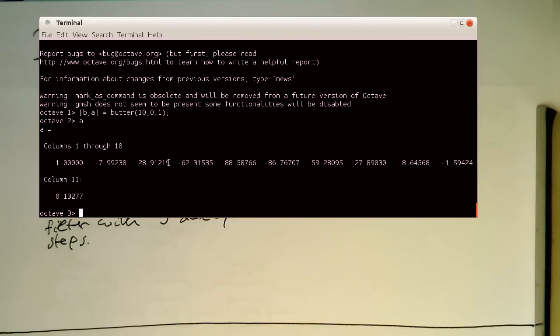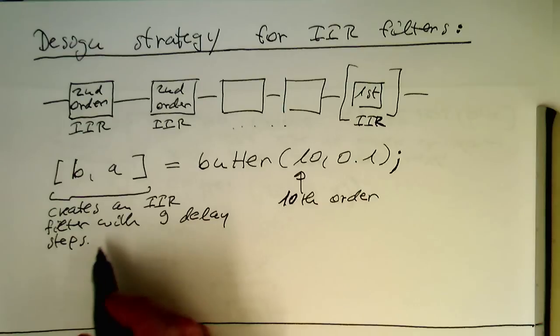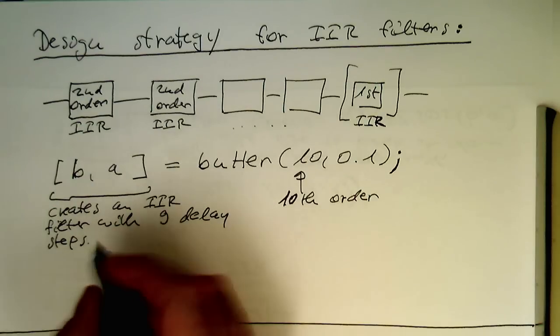So this is not a second order system, but a ninth order if we call this like this. We would like to break it down in second order units, and luckily there's MATLAB Octave commands which does this. Creates IIR filter with 9 delay steps, so we need to break it down.